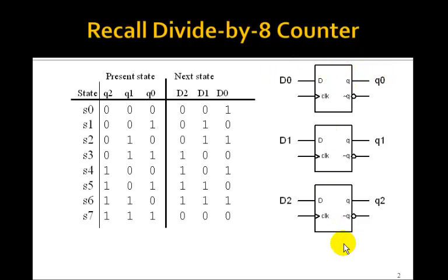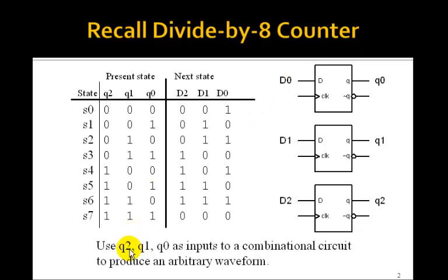Recall this divide by 8 counter. Remember we had the 3 bits which generated Q2, Q1, Q0 that counted from 0 to 7. So the idea is to use Q2, Q1, and Q0 as inputs to a combinational circuit that will produce the arbitrary waveform.